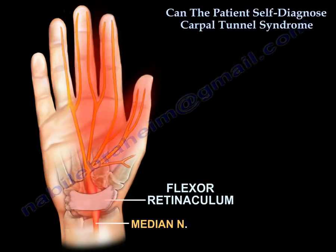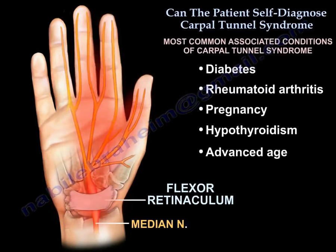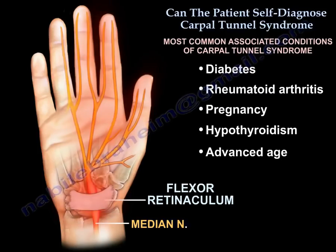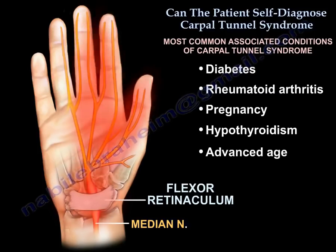The most common associated conditions of Carpal Tunnel Syndrome are diabetes, rheumatoid arthritis, pregnancy, hypothyroidism, and advanced age.